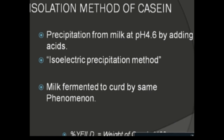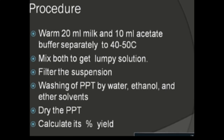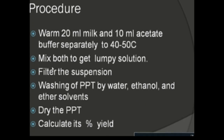The procedure steps are as follows: initially, add acid to decrease the pH, then induce precipitation using organic solvents or heavy metal ions; precipitation can also be achieved by heat. Warm the milk and acetate buffer separately in two conical flasks in a ratio of 2:1. For example, if milk is 20 ml, buffer is 10 ml; if milk is 50 ml, buffer is 25 ml. After heating, mix both solutions to get a lumpy solution, which forms because casein precipitates due to the change in pH. Wait 5–10 minutes to confirm the reaction is complete.